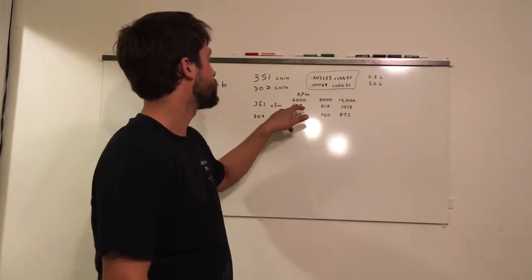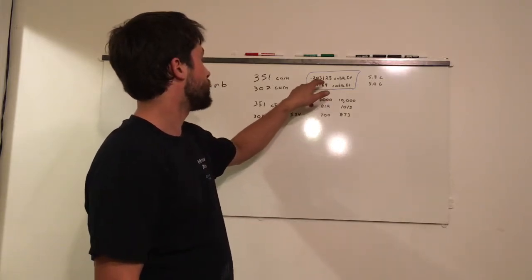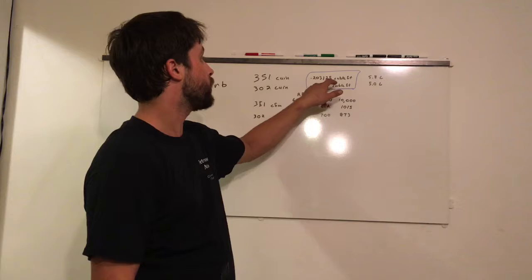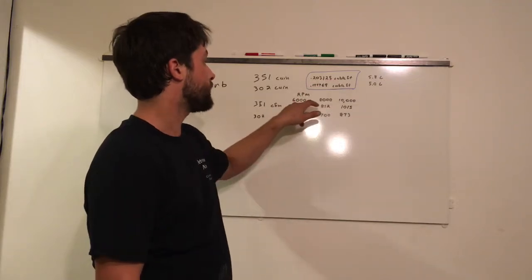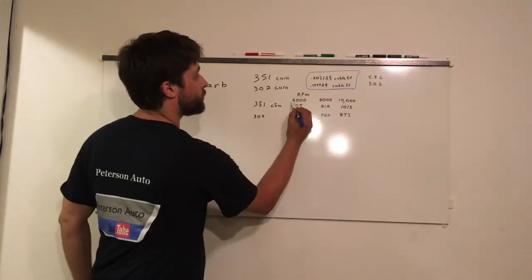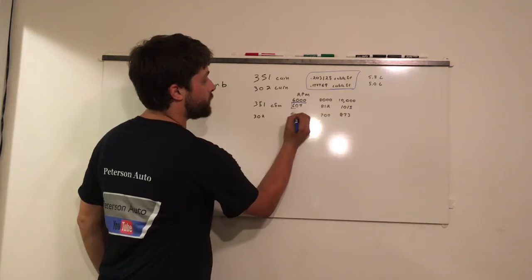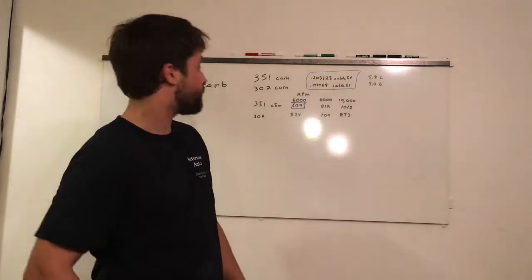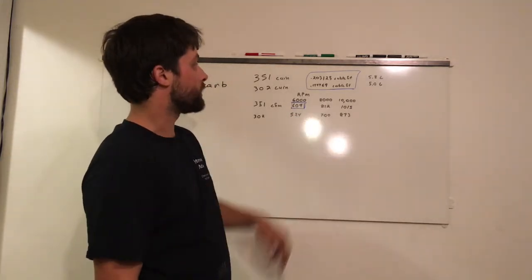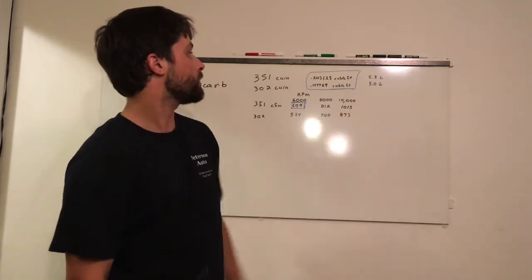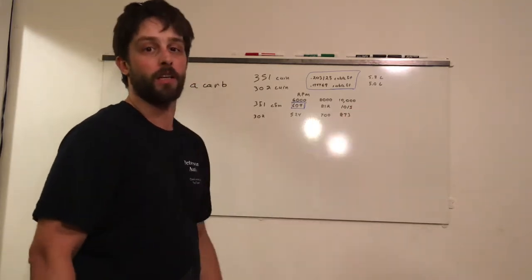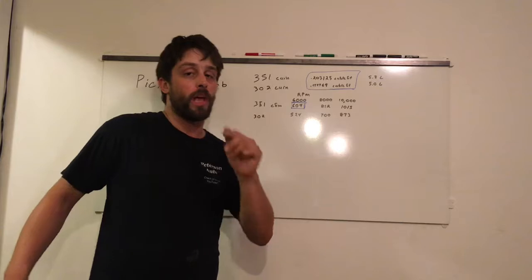So for example, 351 Windsor, 0.203125 times 6,000 RPM is going to give you 609 CFM. Times 8,000 is going to give you 812, 10,000 is 1,015. Now we're not done yet, there's more you have to consider.